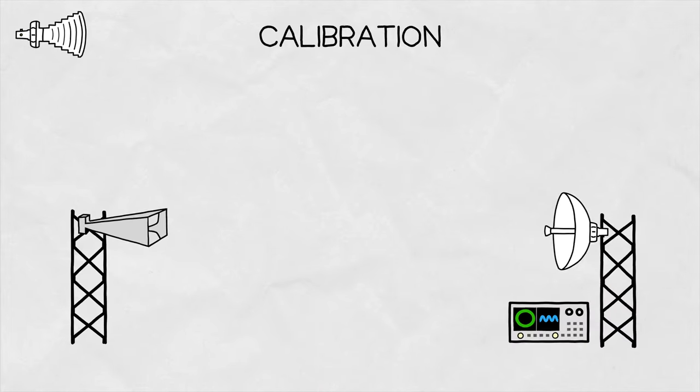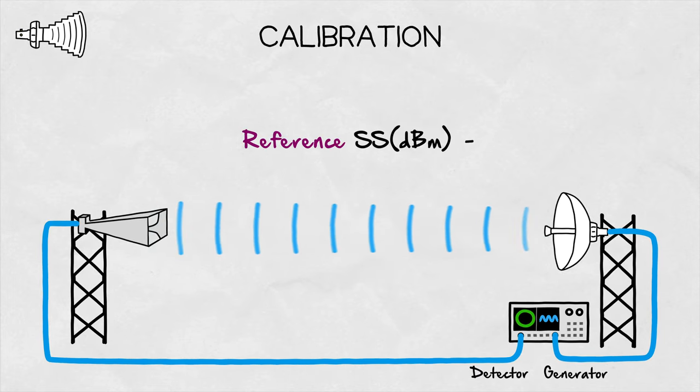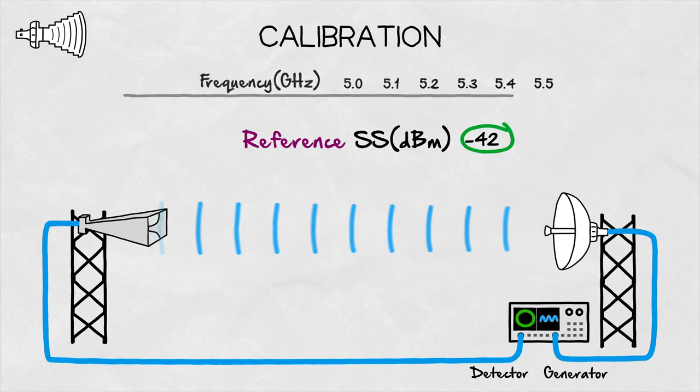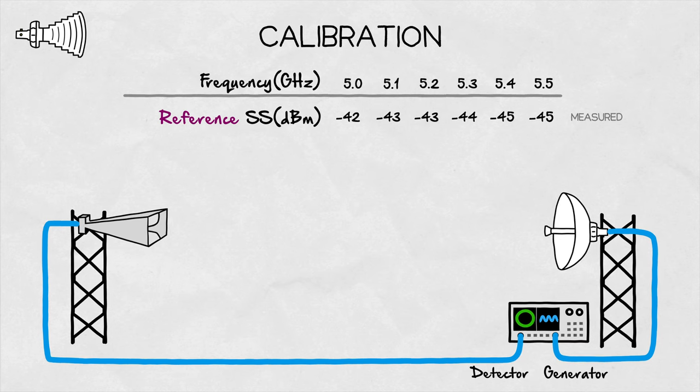Once everything is in place, we are ready to set it up. We connect the source antenna to the signal generator and the reference antenna to the signal detector. We measure the signal strength in dBm that is received at the detector and store it as a reference value. We do this for all frequencies for which we want to measure the antenna gain and setup calibration is done.